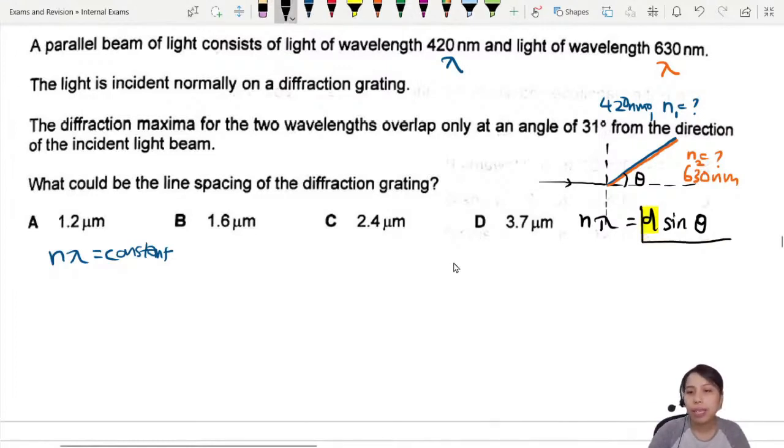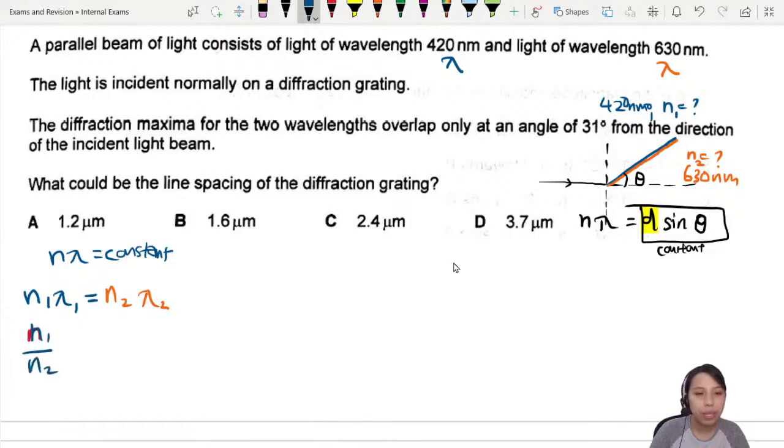So you could conclude: whatever that is, n and lambda is changing, but this whole thing in the box is constant. Hence I can conclude that n1 lambda1 equals n2 lambda2. I don't know how to start if I use the other equation - not enough information, so I start here. Let's plug in everything. We don't know the n's, so n1 over n2 equals lambda2 over lambda1. Lambda2 is 630 nanometers, lambda1 is 420 nanometers.